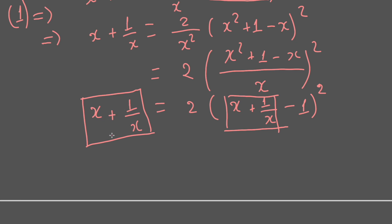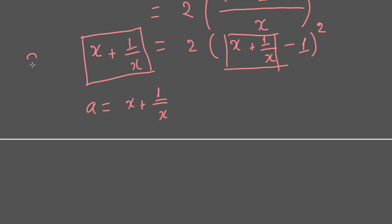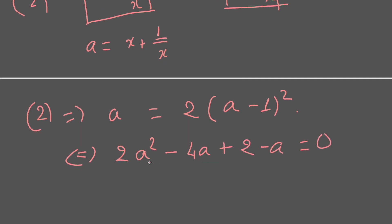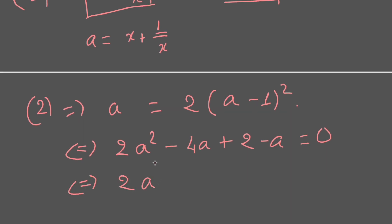We use variable substitution: let a = x + 1/x. Then we rewrite the equation as a = 2(a - 1)². Expanding, this gives us 2a² - 4a + 2 - a = 0, which simplifies to 2a² - 5a + 2 = 0.